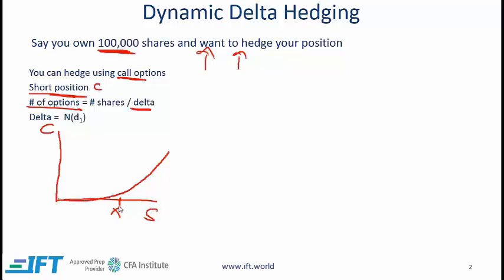Let's say that you hedge your position in these shares using call options when the stock price was a little below strike. Say the strike is 50 and you hedge when the stock was worth 47. At a stock price of 47, there is a given Delta, and you calculate the number of options. What if the stock price increases? Notice the Delta increases. Since the Delta is going up — and it's in the denominator — the number of options goes down, which means you need fewer short calls.